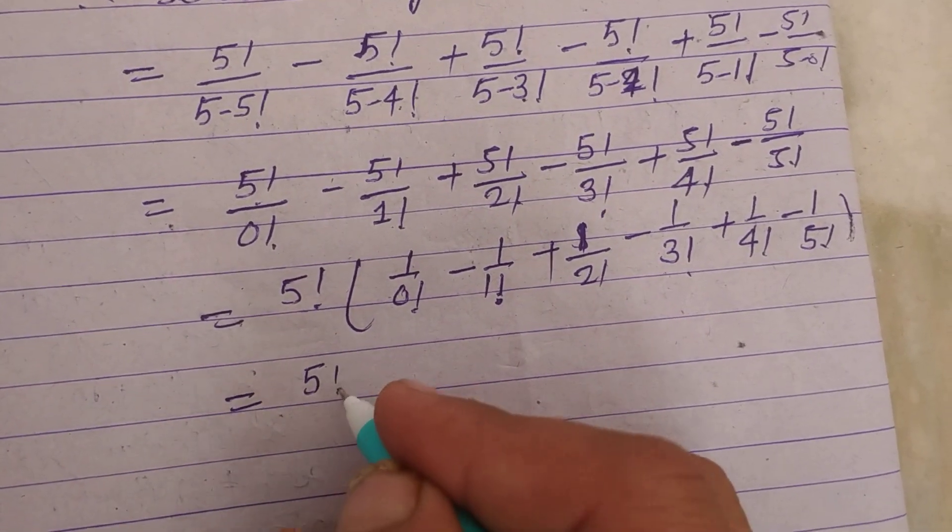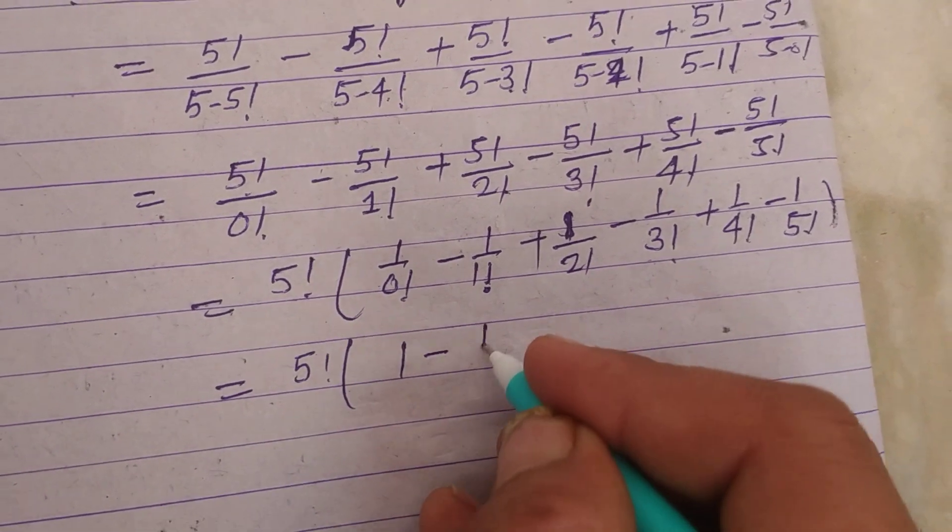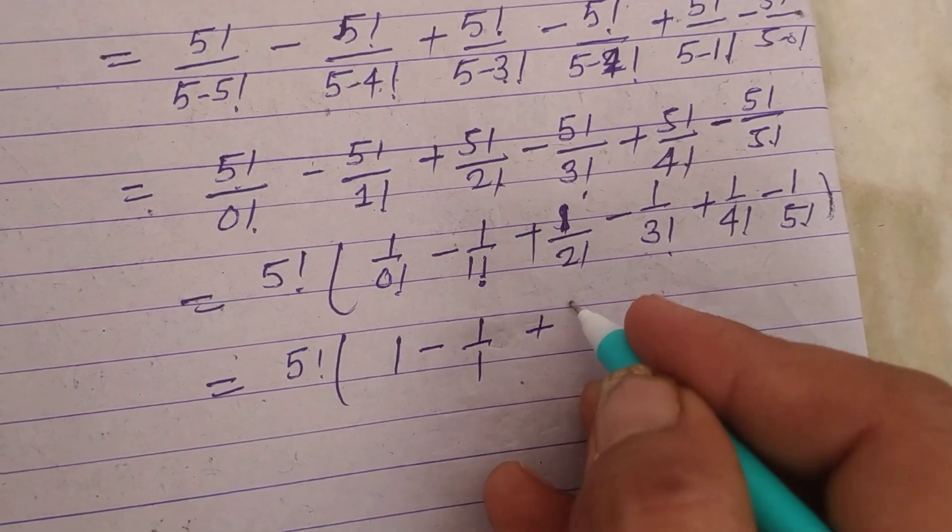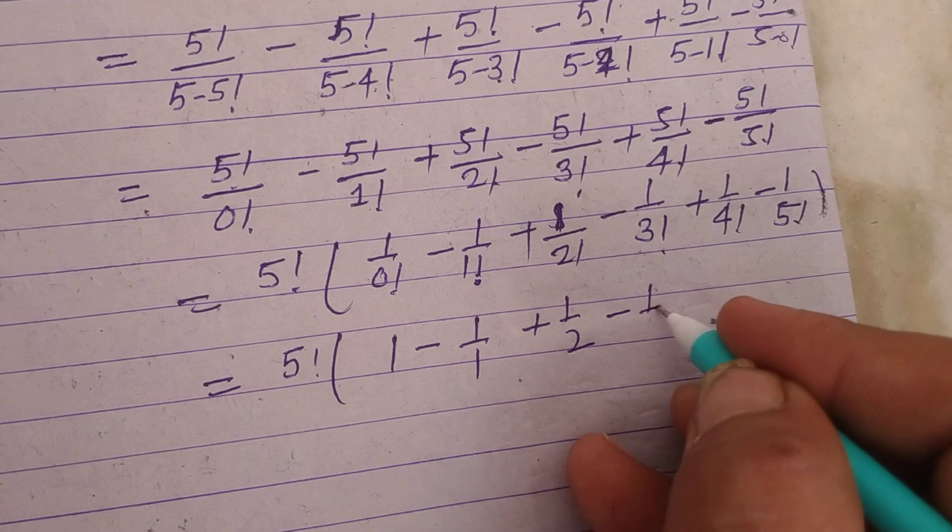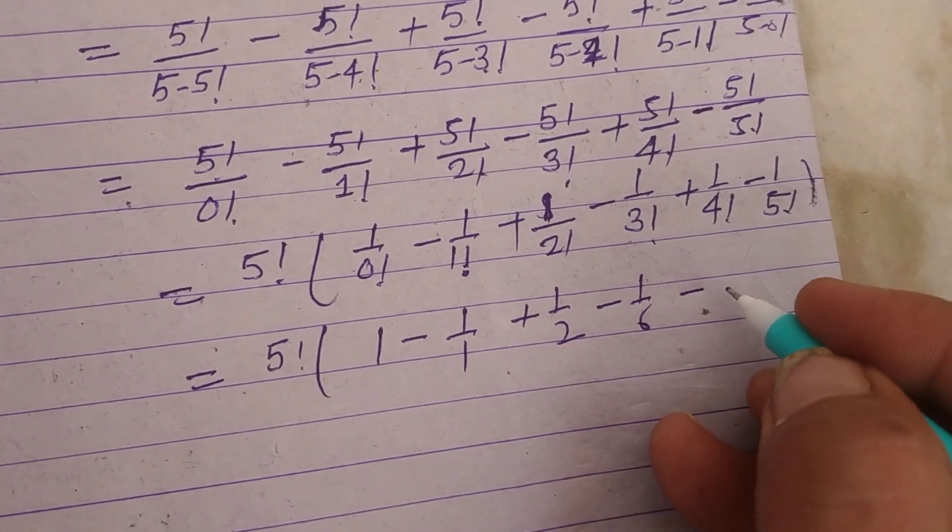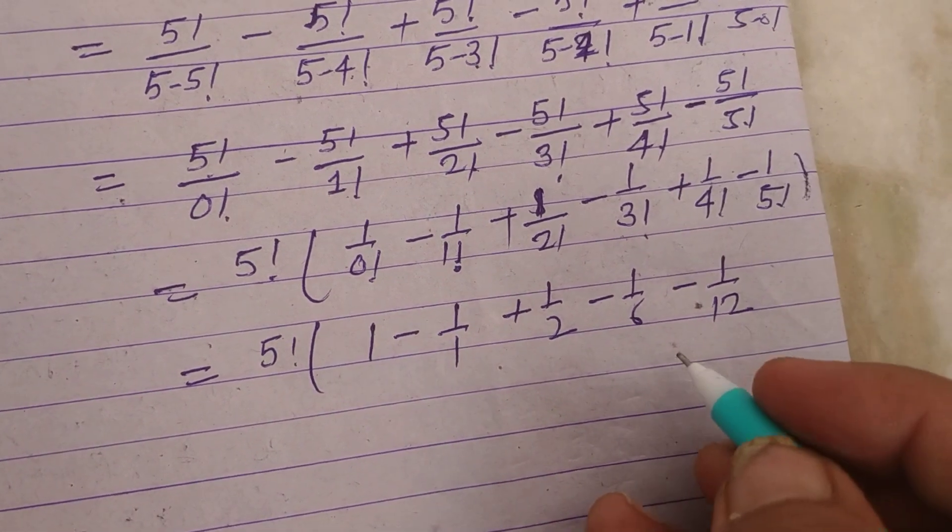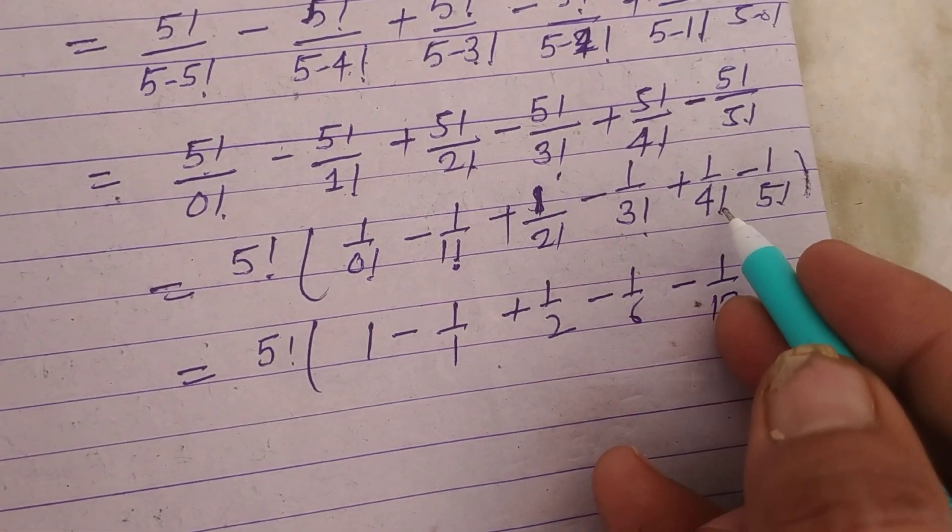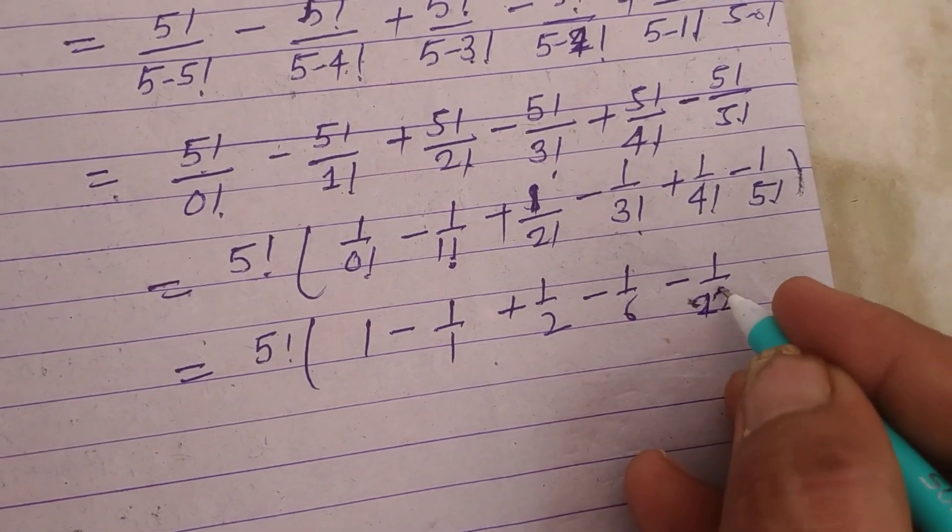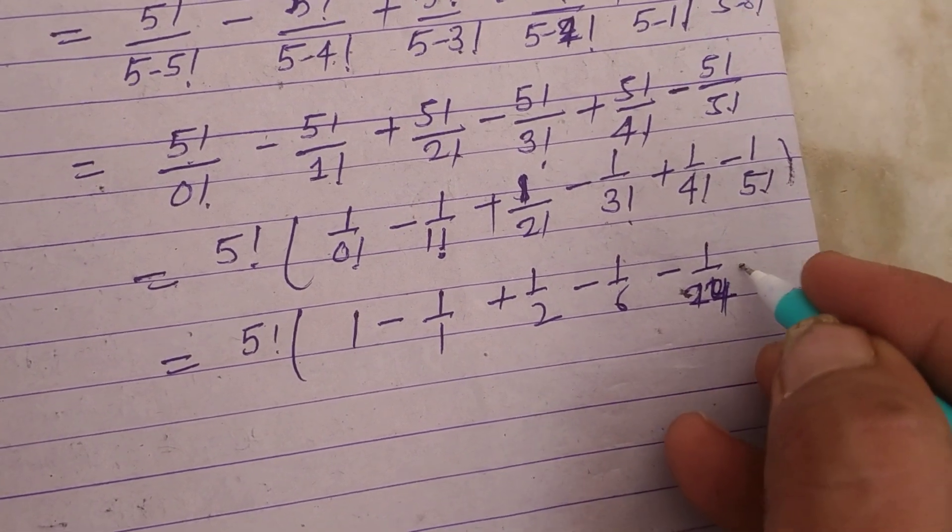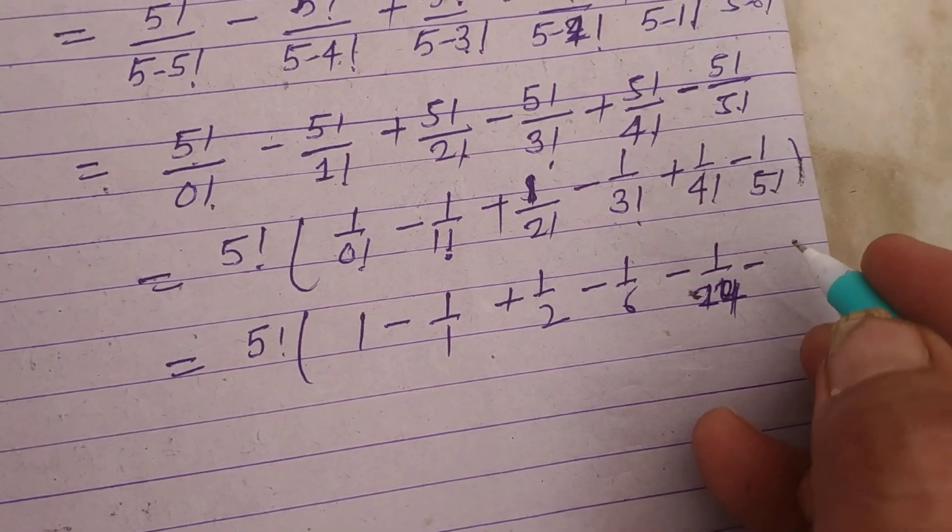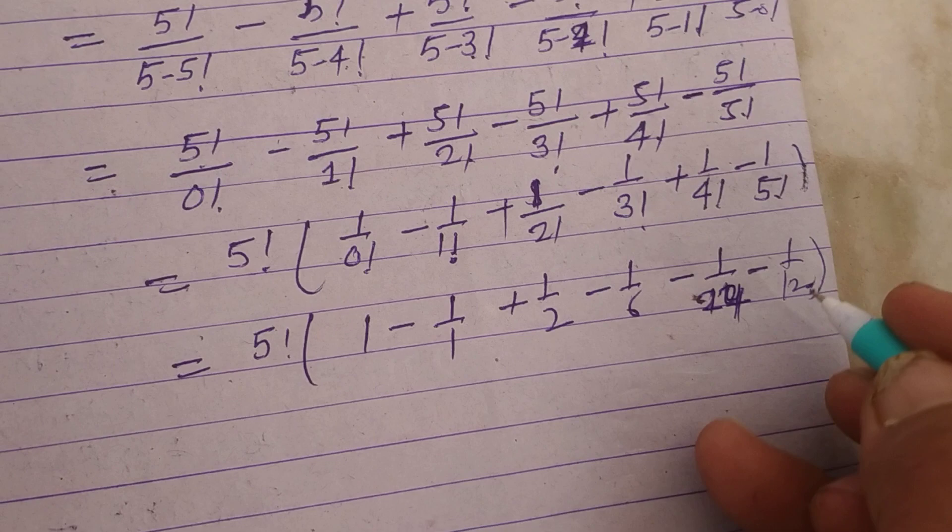So this is 5!. Now 0! is 1, 1! is 1, 2! is 2, 3! is 6, and for 4!: 4 times 3 is 12, 12 times 2 is 24, so 1/24. And 5!: 5 times 4 is 20, times 3 is 60, times 2 is 120.